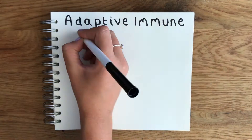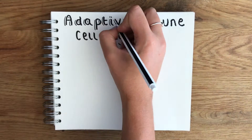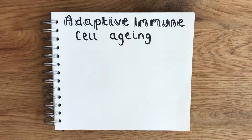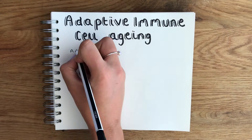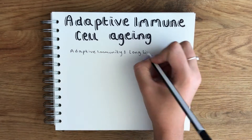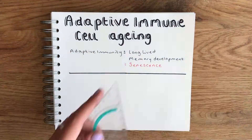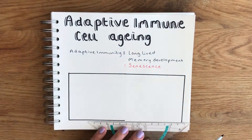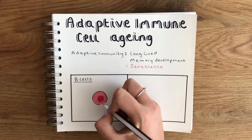Because our adaptive immune cells are able to develop memory and are extremely long-lived, they are actually particularly sensitive to senescence. This means B cells and T cells, which make up our adaptive immune system, can become senescent.